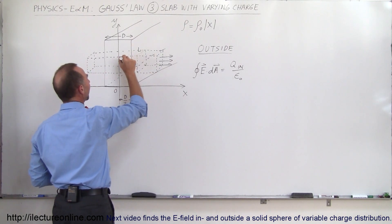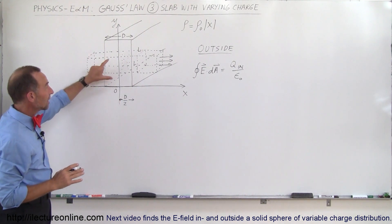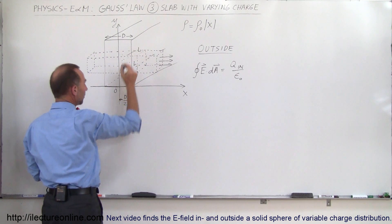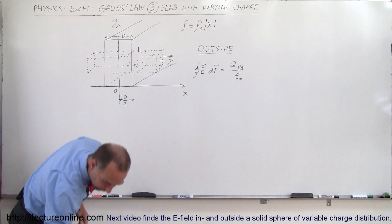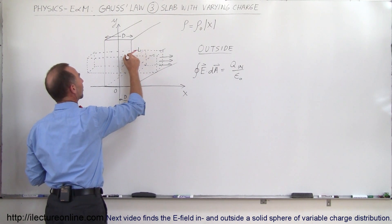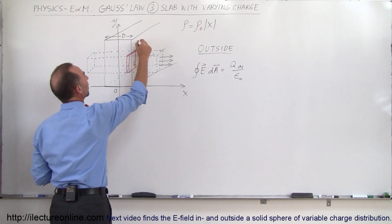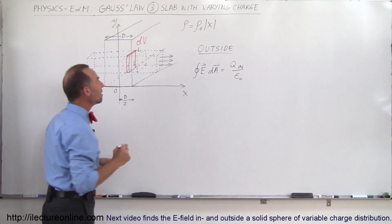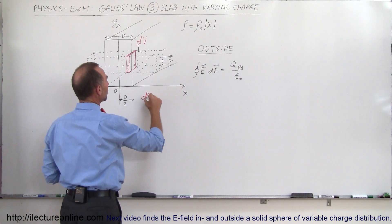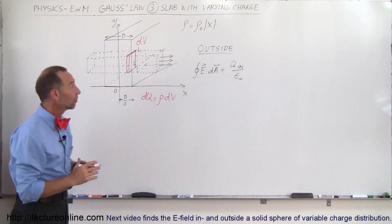We're going to use the equation: the surface integral of E dot dA equals Q_inside divided by ε₀. We're talking about the electric field on the outside of the slab, so the relevant area is just the far face of the Gaussian surface. We don't worry about the sides because the electric field is perpendicular to those faces. To find the charge inside the slab we're going to have to integrate. We'll find a small volume element dV, and the charge in it is dQ.